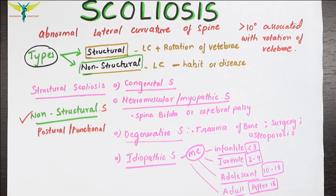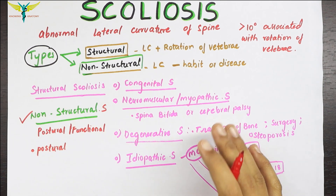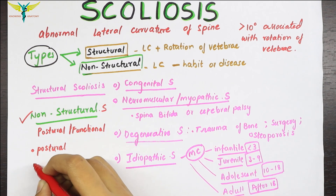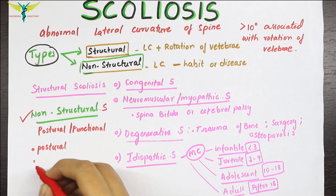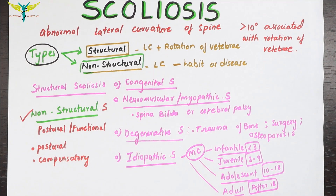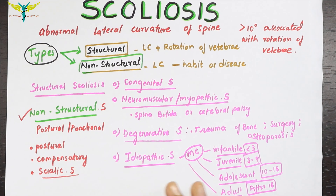The types of non-structural scoliosis include: postural, in which the curvature is formed due to the prolonged use of wrong posture; compensatory, caused by leg length discrepancy with no vertebral rotation, which resolves in the sitting position; and sciatic scoliosis, in which the curve results from the patient trying to avoid pain from an irritated sciatic nerve during sciatica.